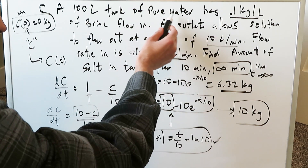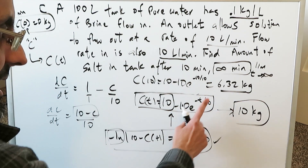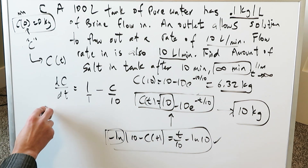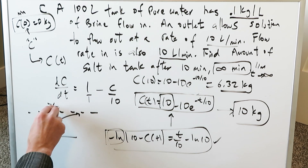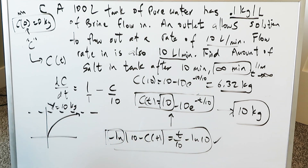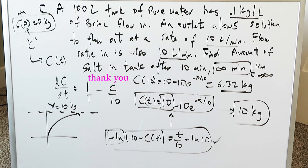In summary: at t = 0 minutes, 0 kg of salt since we started with pure water; at t = 10 minutes, 6.32 kg of salt; at t = ∞ minutes, 10 kg of salt — the maximum achievable. The function approaches a horizontal asymptote at y = 10 kg, representing the maximum salt that can be concentrated with this system. That concludes this mixing problem focused on concentrating a solution. Thank you for watching; have a good day.